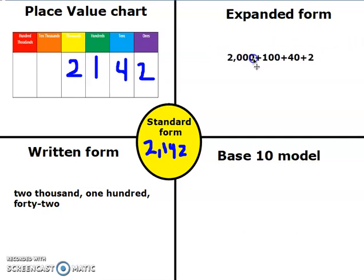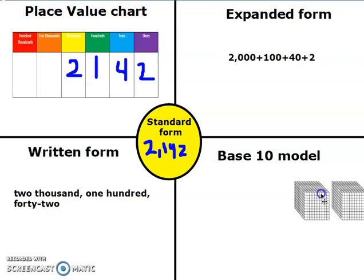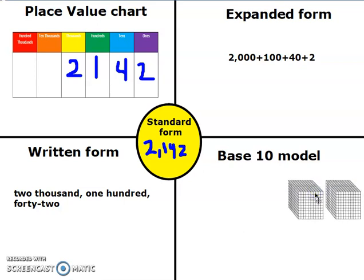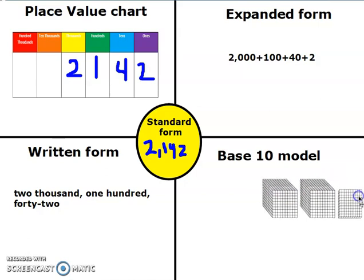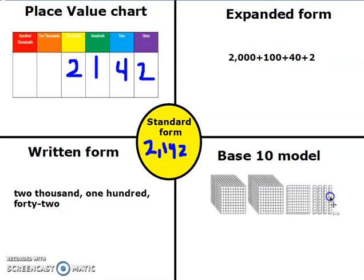And so for my expanded form, it would look like this. For the base 10 model, I know I need 2 one-thousand blocks — here's my first 1,000 block and my other 1,000 block. Then I need 1 hundred — here's my 100 block. And then I need 4 tens and 2 ones. So when I'm looking at it, I have my 2 thousands, my 1 hundred, my 4 tens, and my 2 ones.